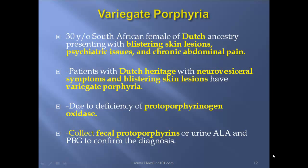Variegate porphyria case report: 30-year-old South African female of Dutch ancestry — the keyword is Dutch, remember this — presenting with blistering skin lesions, psychiatric issues, and chronic abdominal pain. The big difference between this and porphyria cutanea tarda is that porphyria cutanea tarda will not have any neurovisceral issues. So if you see Dutch ancestry, psychiatric issues, and skin lesions, think variegate porphyria. Patients with Dutch heritage presenting with neurovisceral symptoms and blistering skin lesions have variegate porphyria. This is due to deficiency of protoporphyrinogen oxidase. Collect fecal protoporphyrin or urine ALA and PBG to confirm the diagnosis. Key words: variegate porphyria, Dutch ancestry, psychiatric issues, and fecal protoporphyrin.